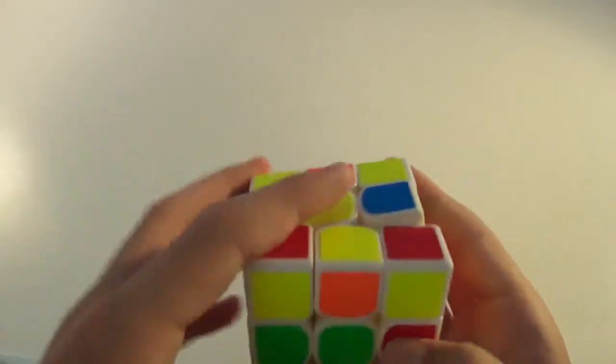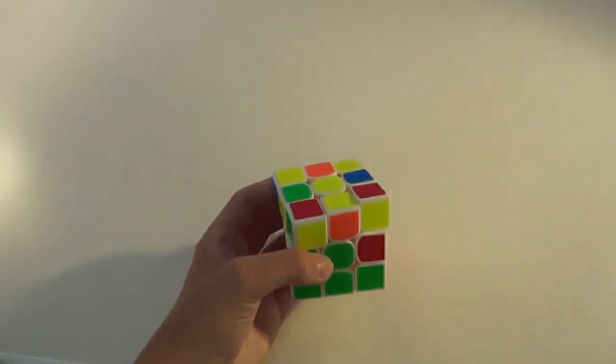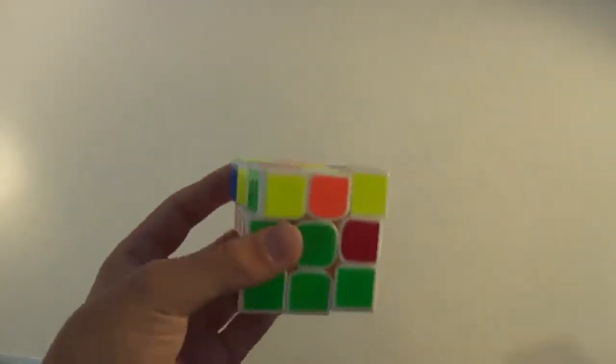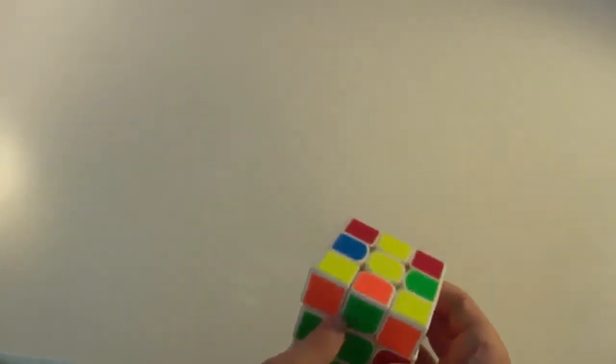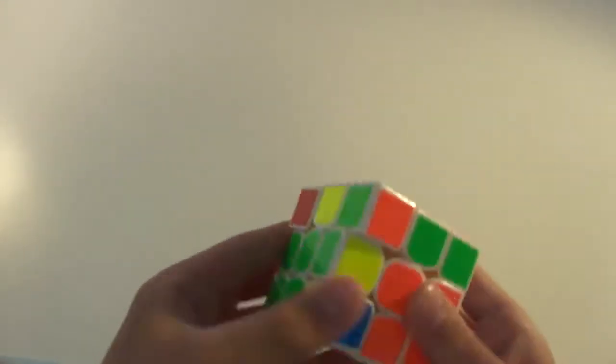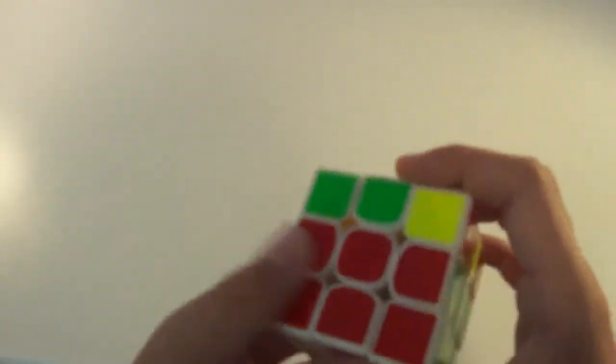Now, the edge has been brought to the top layer. It's over here. So, now, you place it in like it's any old edge, like the other ones. You just match it up with its center, the color on top is on the right, and you just do the algorithm. So, that's how you solve it if it's flipped.